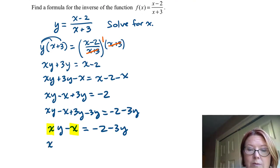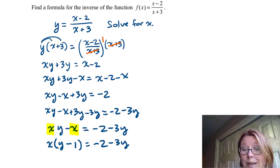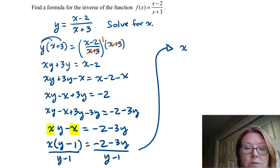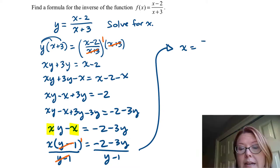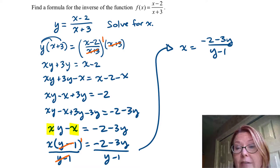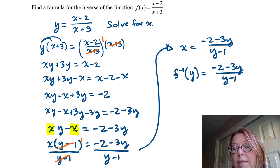Now I can factor out an x: x times (y minus 1) equals negative 2 minus 3y. Dividing both sides by (y minus 1) gives x equals (negative 2 minus 3y) over (y minus 1). So we now have an inverse function, which I can write as f inverse of y equals (negative 2 minus 3y) over (y minus 1).